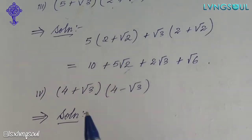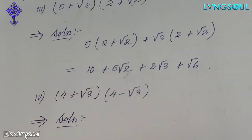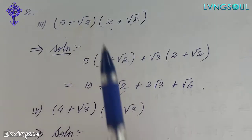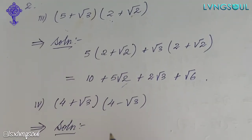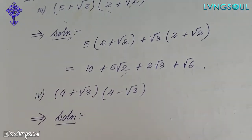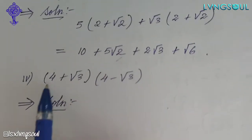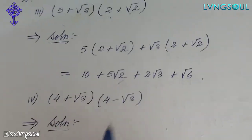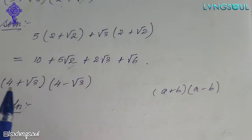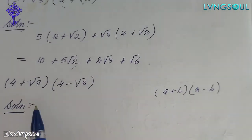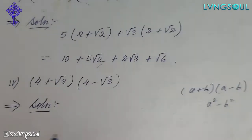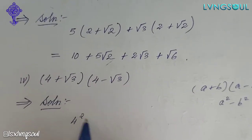We call it a plus b into a minus b. A plus B into C plus D is a formula. It involves a formula to apply. The formula is applied for 1. This is a plus b into a minus b formula: a is 4, b is root 3. This gives a squared minus b squared, that is 4 squared minus root 3 squared.